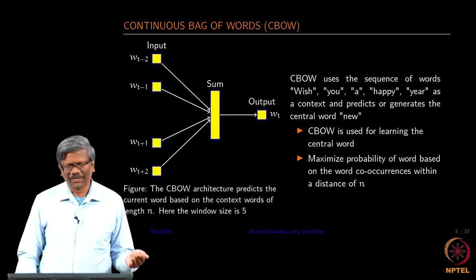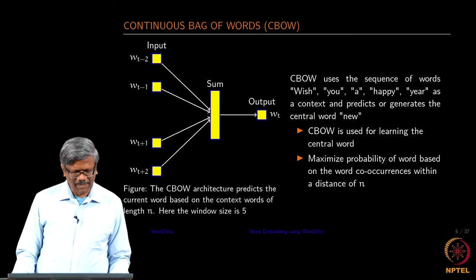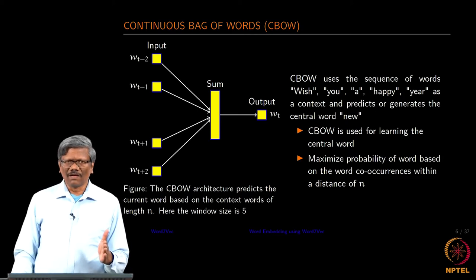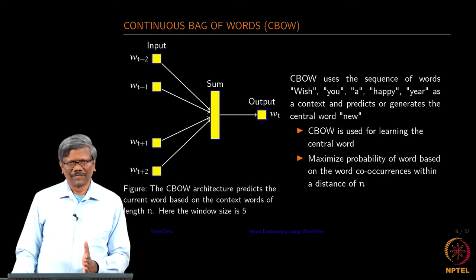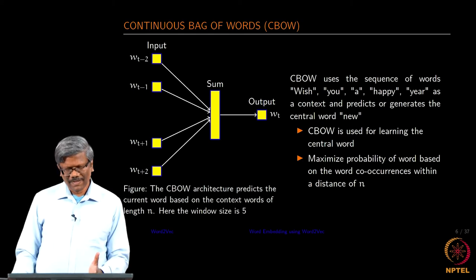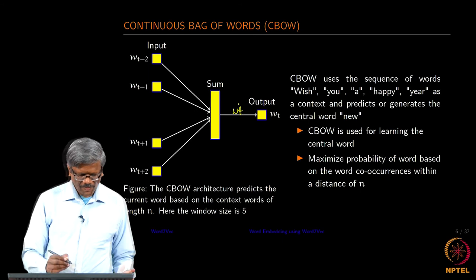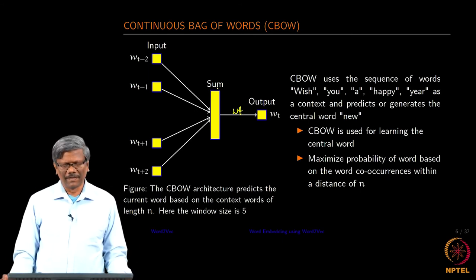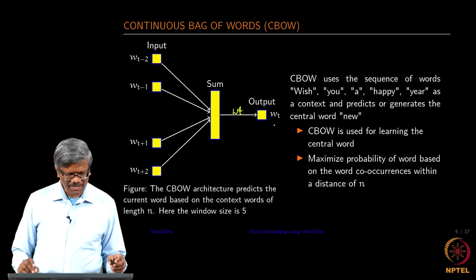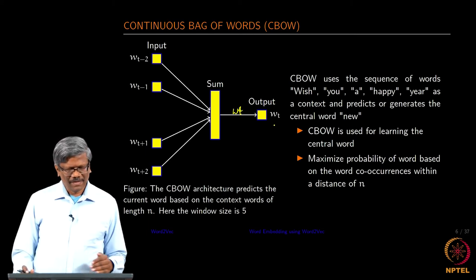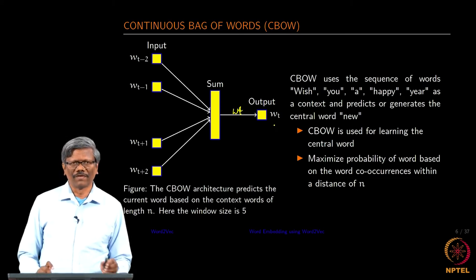Based on the understanding of continuous bag of words, we will now define a neural network. In the neural network, a context word comes in as input, then it is linearly summed using the input and weights, and then the output is generated using the weights and the hidden layer values. Finally, we take a softmax to find out what the right word is. Since we are using a one-hot vector, I will not be able to input all words together in one shot, so I will be inputting only one word at a time.